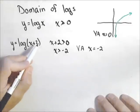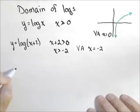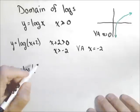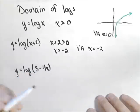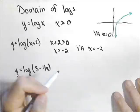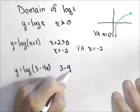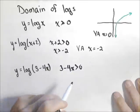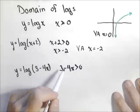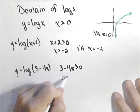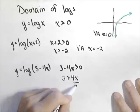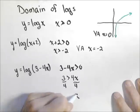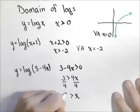This process works as long as what we have inside the log is linear. We'll look at a quadratic one in a moment. Let's do another example: y equals log of three minus four x, and we want to find the domain algebraically. We know that three minus four x has to be greater than zero. Adding four x to both sides gives three is greater than four x, then dividing both sides by four...